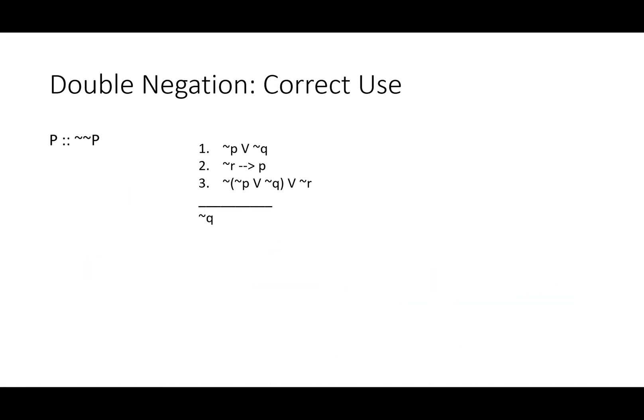How about this? Either not P or not Q. If not R, then P. And it's not the case that either not P or not Q or not R. Therefore not Q. That's a mess. And yes, we're going to use a few double negations. So let's take a quick look.